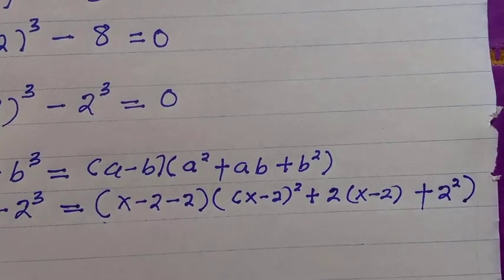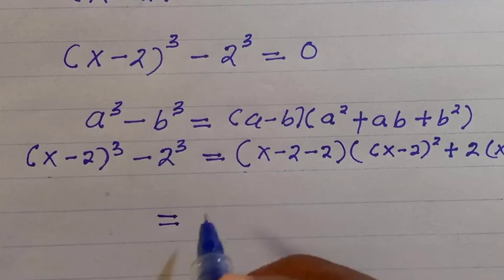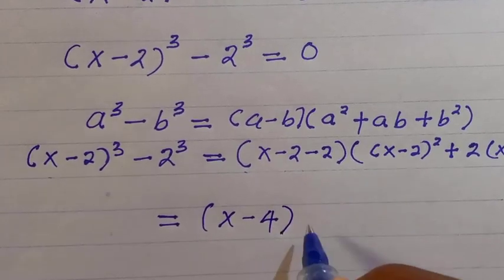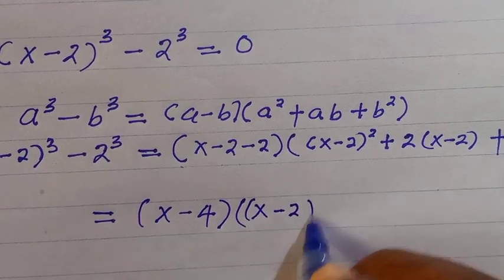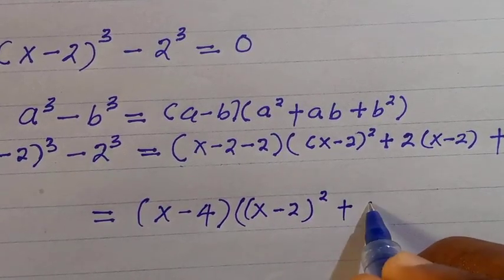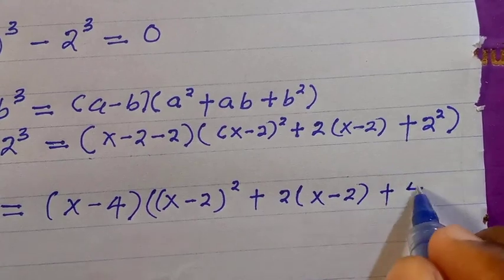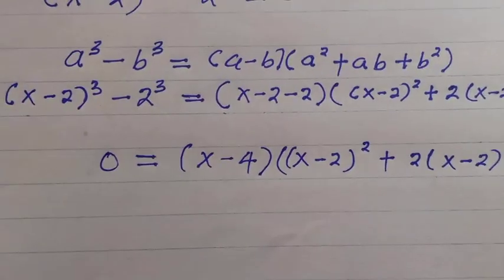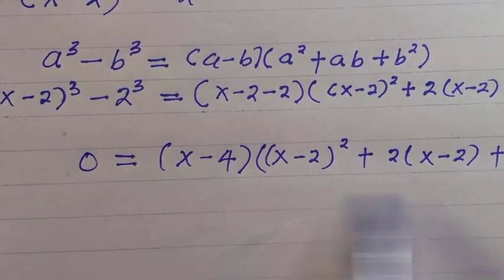Then 2 to the power of 4 gives us 4 for the constant term. This simplifies to x minus 4, times the bracket x minus 2 squared plus 2 times x minus 2 plus 4, and the whole expression equals 0. Therefore we have two possibilities: x minus 4 equals 0, or the bracket equals 0.